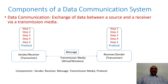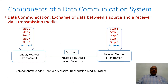What is a data communication system? It is a system which contains several components to transmit the data from one place to another place. Data is being transmitted from one end of a location to another end of the location. Basically, the data communication is the exchange of data between a source and a receiver via transmission media.